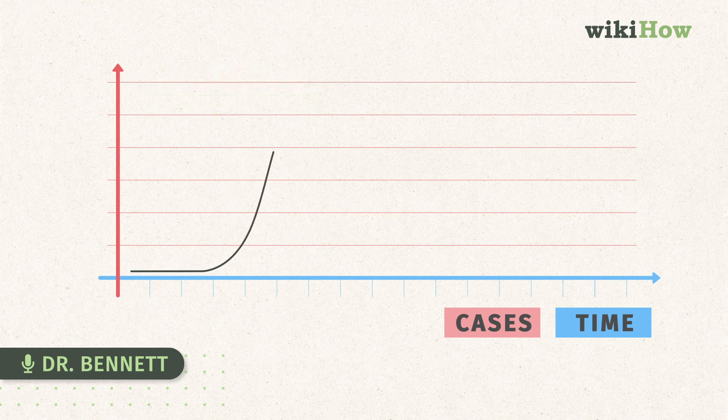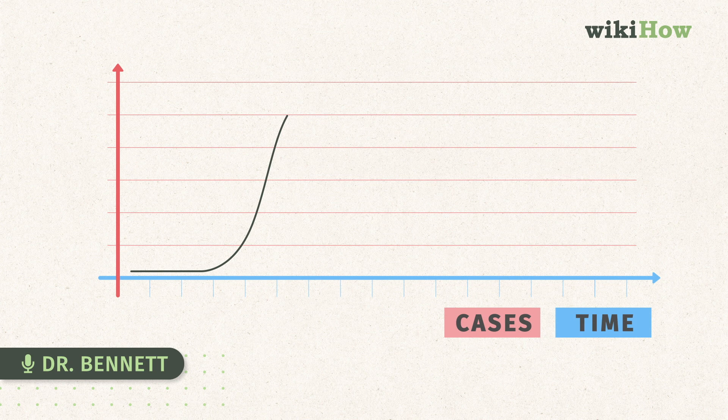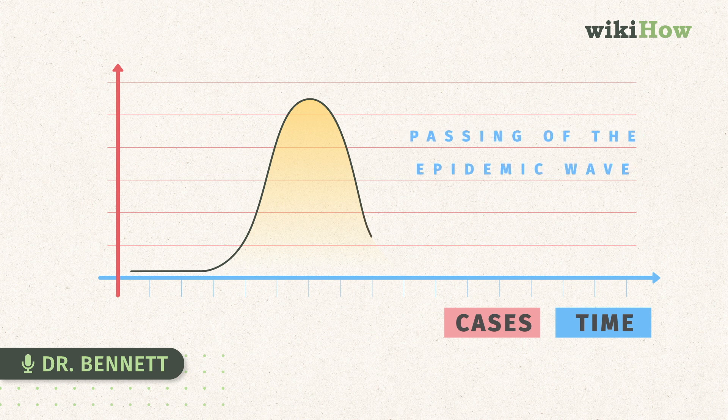Eventually, those daily new cases will stop growing exponentially and they'll start to level off, and then they'll start to drop as the epidemic passes. We call it the passing of the epidemic wave. So that's the curve.